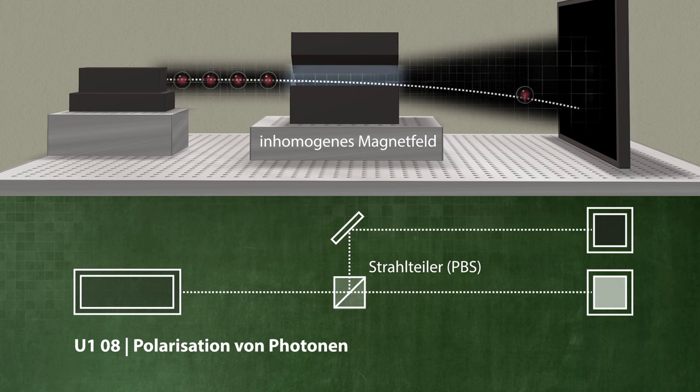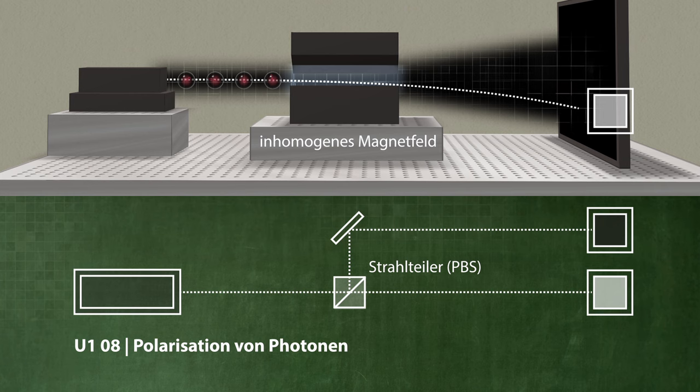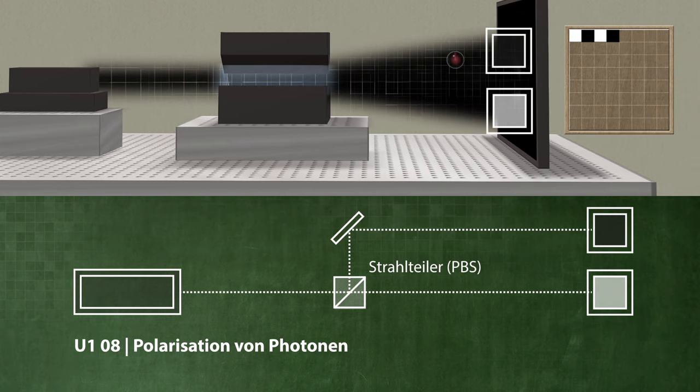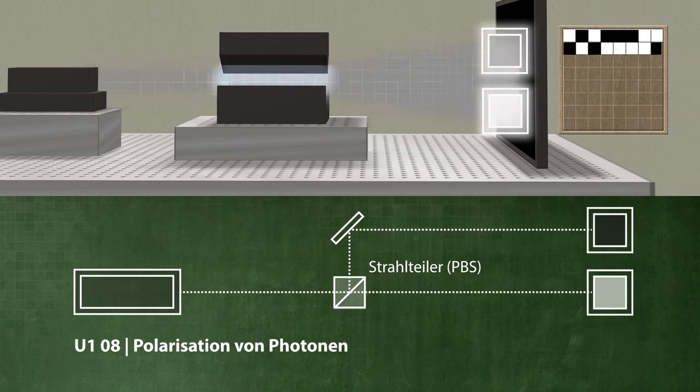Just like with photons, in a single experiment, it is completely random whether the spin points in the direction of the polarizing filter or in the opposite direction. The result is a black-and-white random pattern.